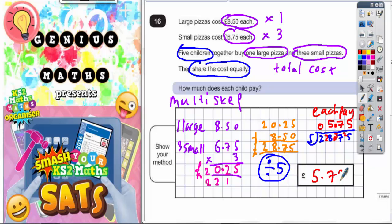So just pop that in there. £5.75. Just to recap, this was a multi-step question. Step one, we figured out the cost of three small pizzas. Step two, we added this to the one large pizza to get the total cost. And step three, we shared the total cost by five, because there are five children sharing the total cost equally. Final answer, £5.75. I'll see you next time.